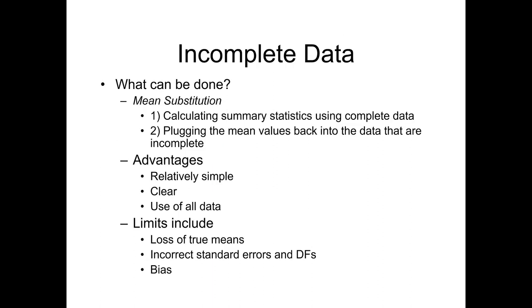Another way is mean substitution — we take the mean of everyone else and substitute it in for the missing person. The advantage is it's relatively simple and clear. But what happens is we lose our true mean because this person is probably not exactly average. If all the people who left had higher depression scores, we've biased our results. We also have incorrect standard errors because now everyone who's missing has the mean, which makes standard errors much smaller.